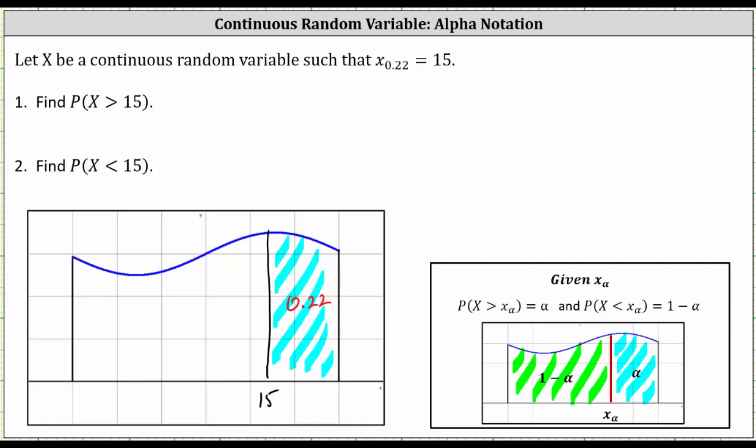and the area to the left of 15 is equal to one minus 0.22, which is equal to 0.78.